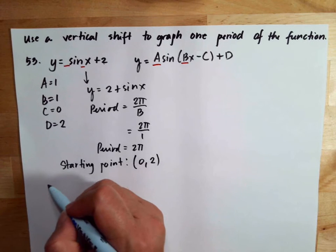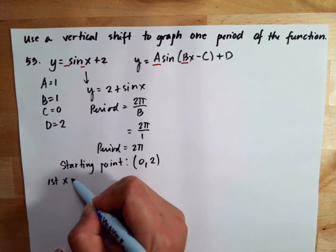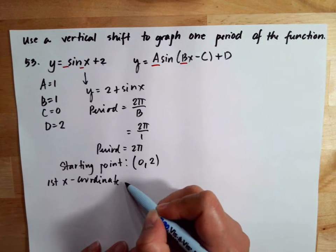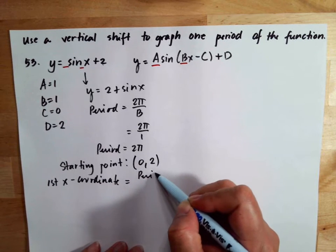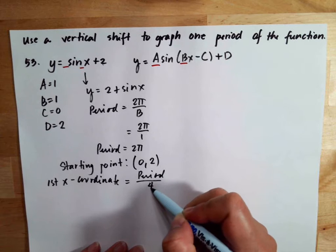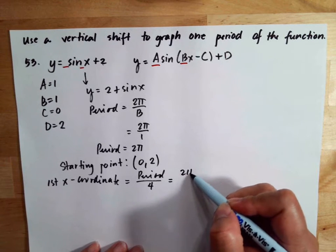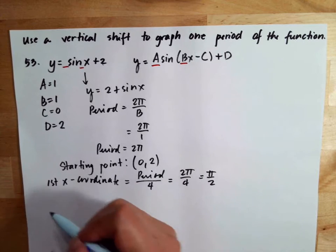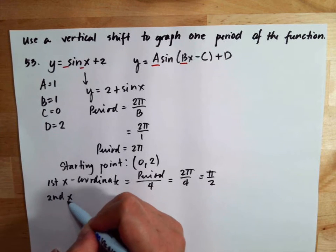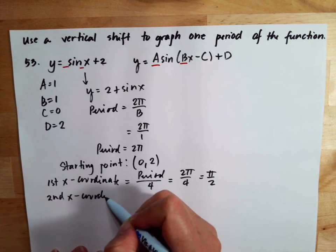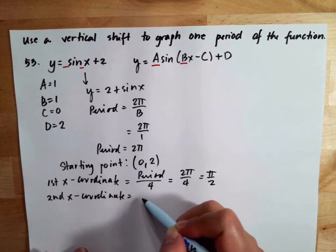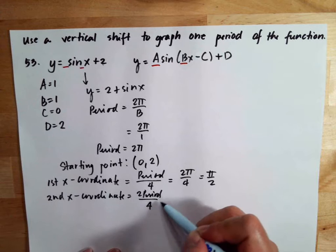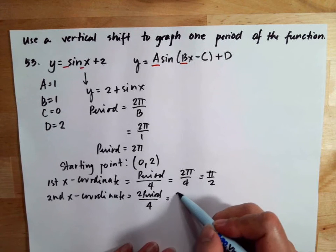Our first x-coordinate is equal to the period over four, so two pi over four, which gives us pi over two. Then our third x-coordinate is equal to three times the period over four.